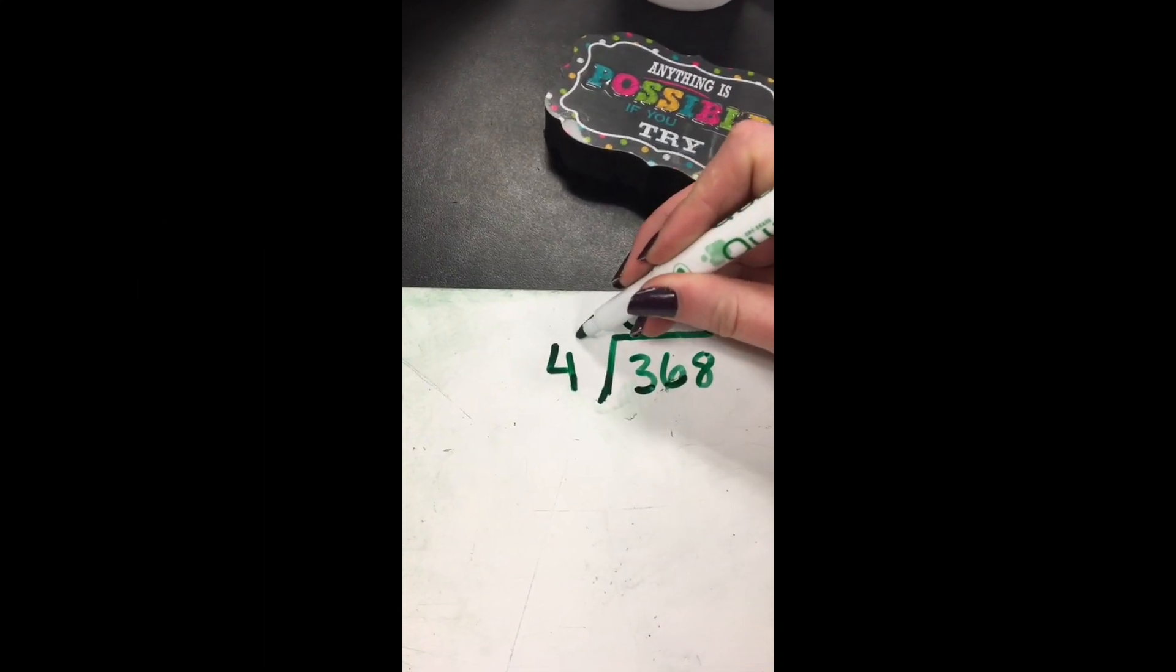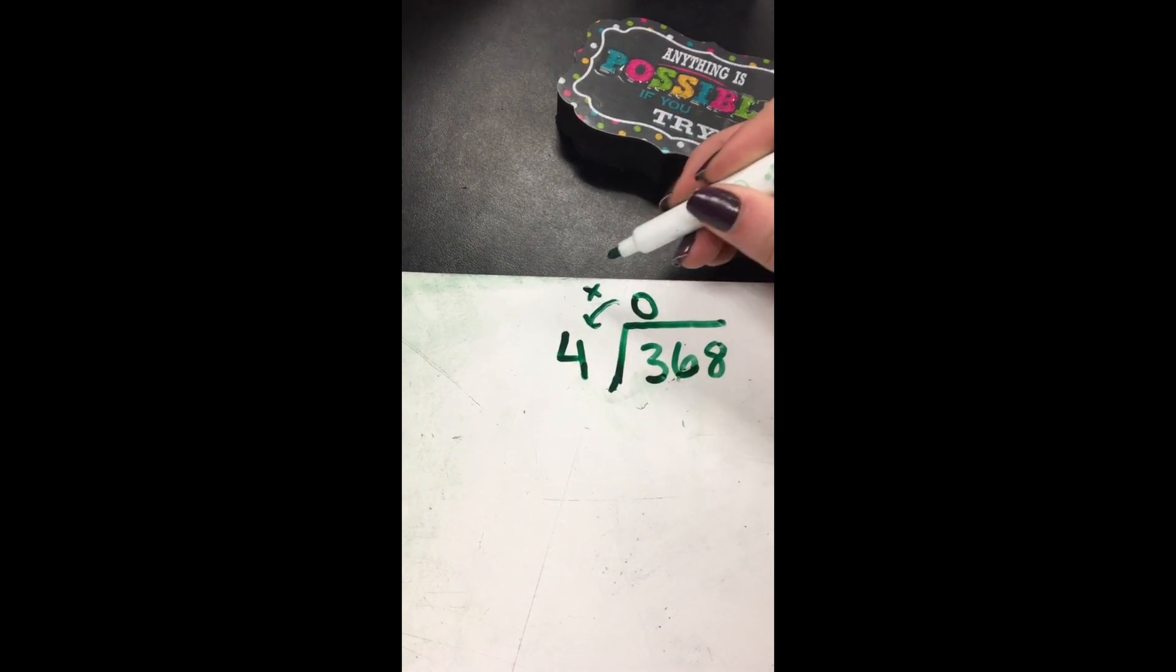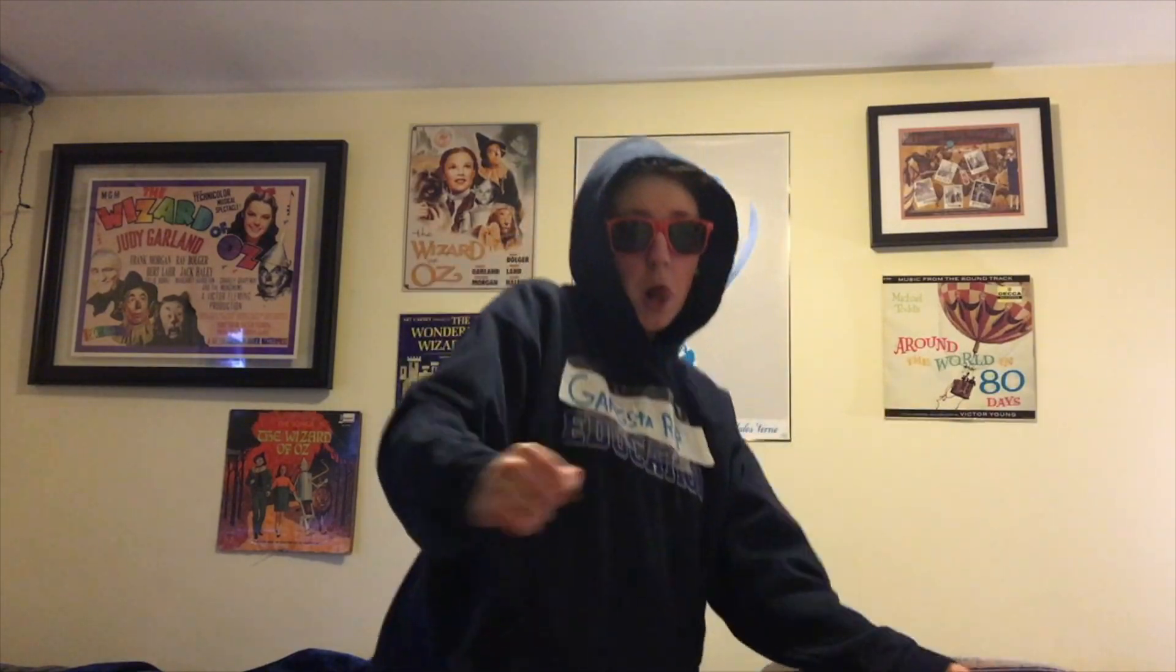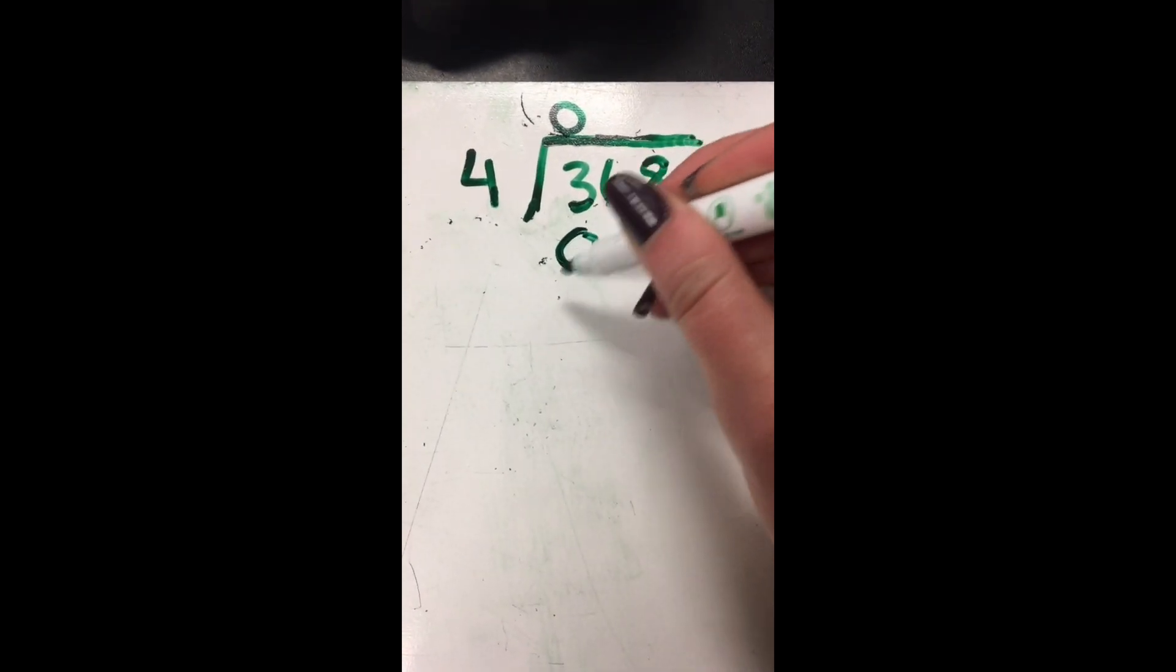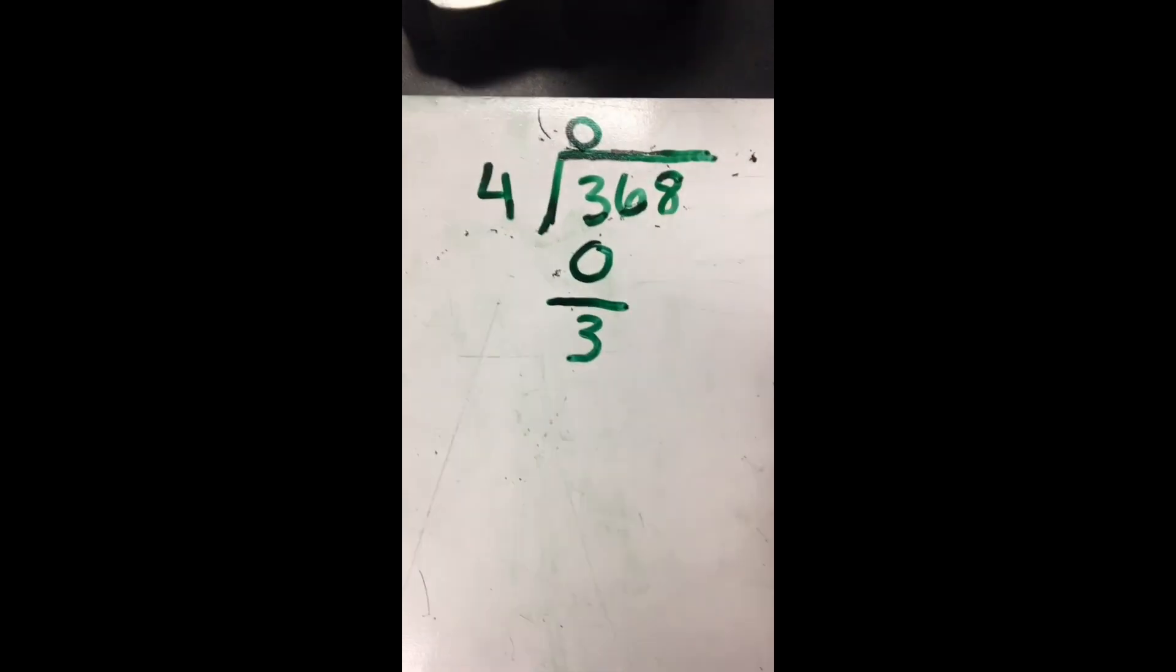Time for the next step to make you feel wiser. Take that answer and multiply it by the divisor. The product goes under the dividend, just below. Subtract the number from the top and there you go.